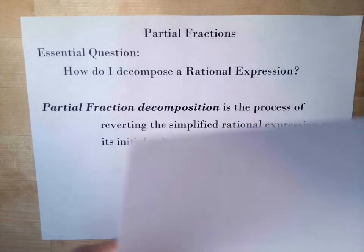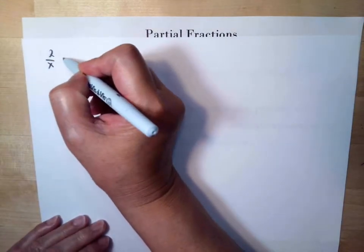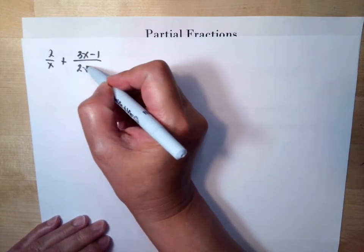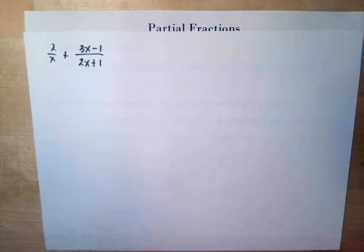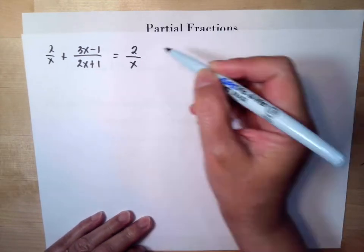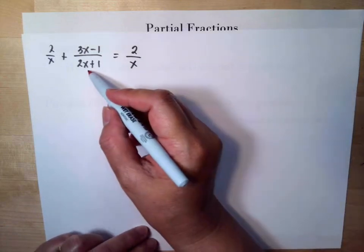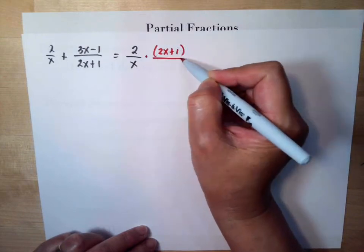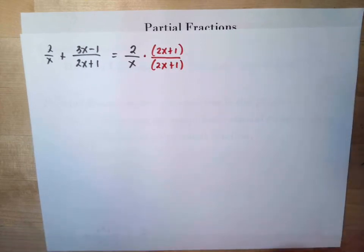So what do we mean by that? For example, if you have 2 over x plus 3x minus 1 over 2x plus 1, what we do is simplify this into one denominator. We multiply the first term by the denominator of the second term, which is 2x plus 1, in the numerator and denominator of the first term.